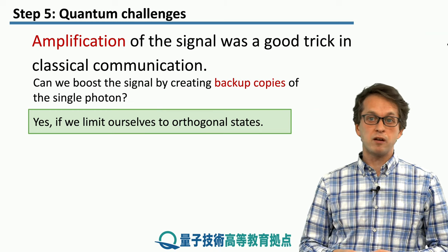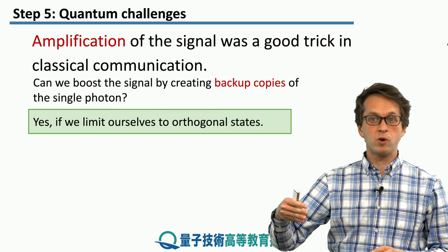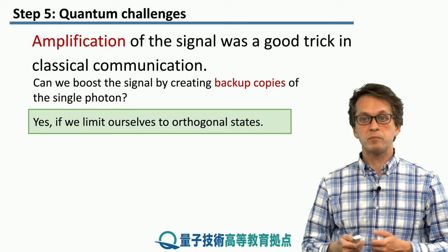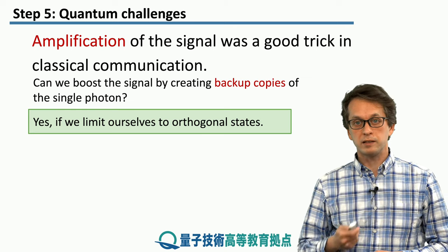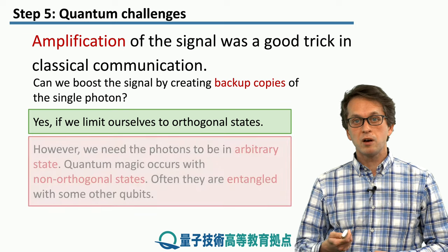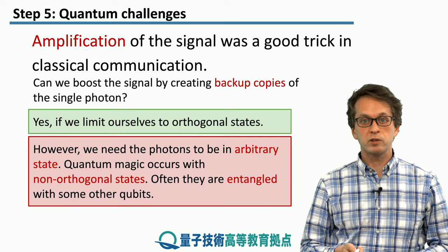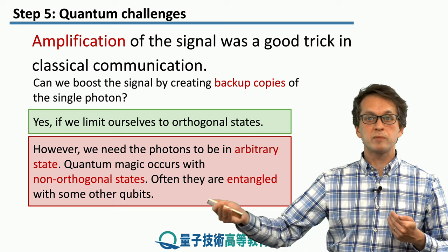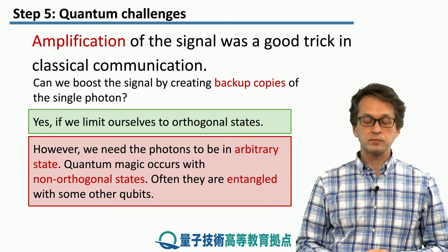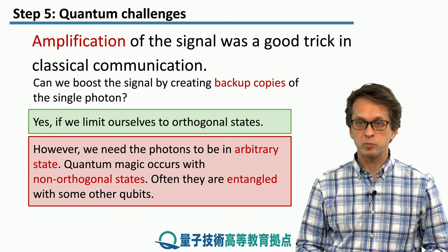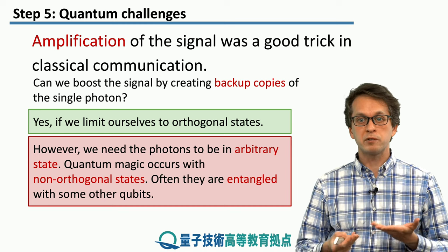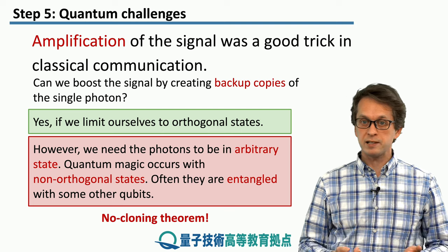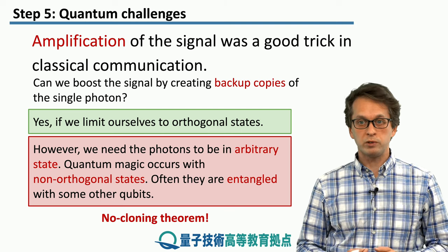If the states that we are sending are, for example, just qubits 0 and 1, fine — we can create backup copies. But in quantum communication, all the magic happens with non-orthogonal states, and often these states are entangled with some other qubits somewhere else. Therefore, we have to be able to copy arbitrary states. And this is where we hit the roadblock from previous lessons: the no-cloning theorem.